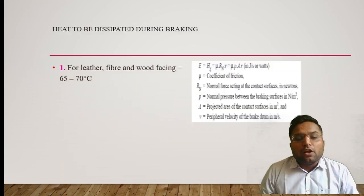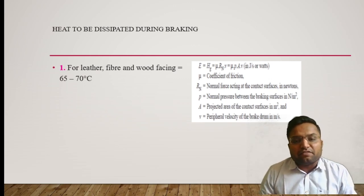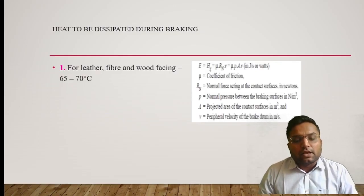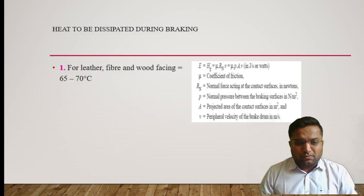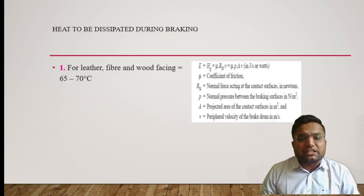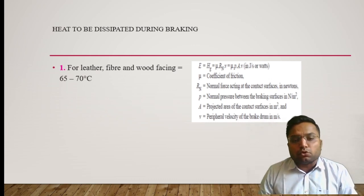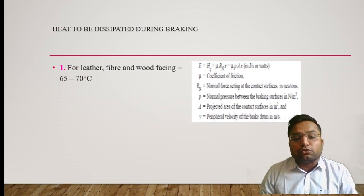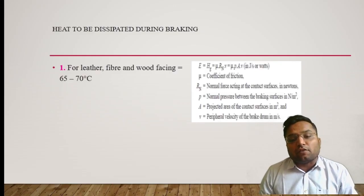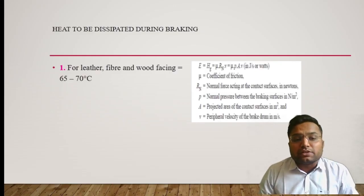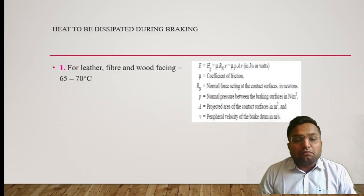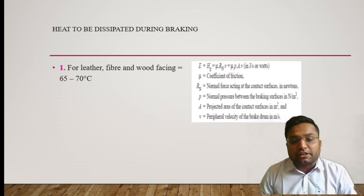Let's move on to heat to be dissipated by braking. There are several materials like leather, fiber, and wood facing. The maximum working temperature for leather, fiber, and wood facing is 65 to 70 degrees Celsius. If the temperature goes above 70 degrees, it will directly affect the working and efficiency of our braking. So if we use leather, fiber, or wood as facing material, we must ensure the temperature does not exceed 65 to 70 degrees Celsius.